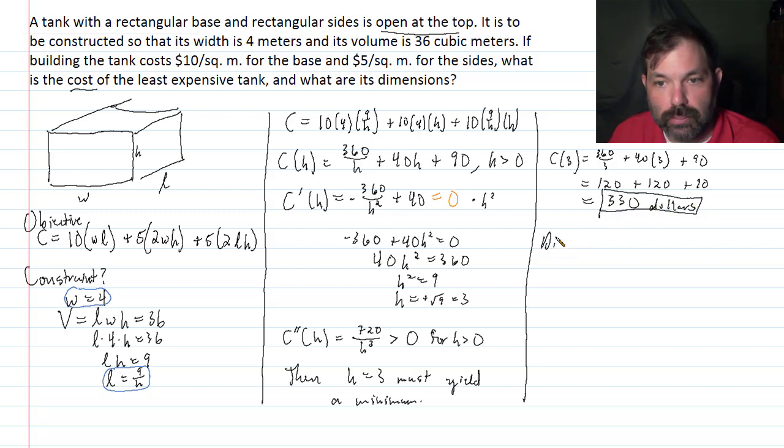What are the dimensions? We know that the width is 4 meters. We now know that the height is 3 meters. And then the length is 9 divided by H. 9 divided by 3, that would also be 3 meters. So it ends up being 4 by 3 by 3.